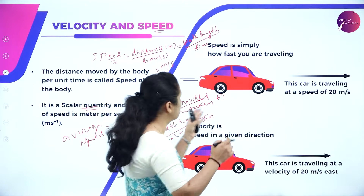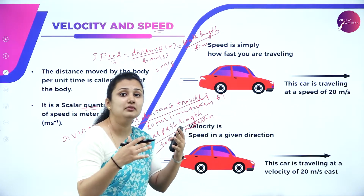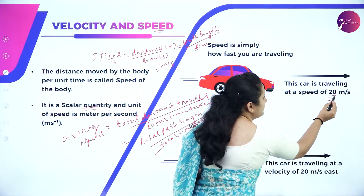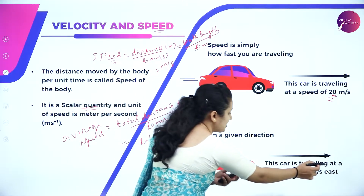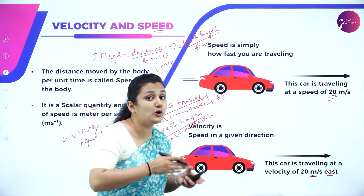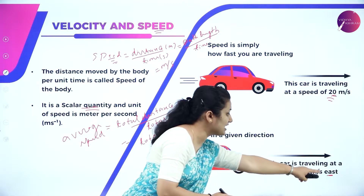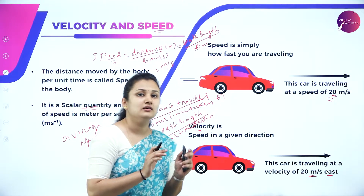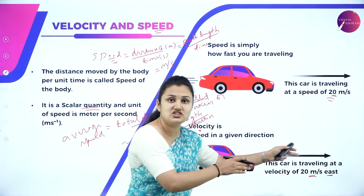Speed is simply how fast you are traveling — for example, a car traveling at 20 meter per second. Speed is a scalar quantity, so only magnitude matters, not direction. Velocity, however, specifies both magnitude and direction: a car traveling at 20 meter per second east. This distinguishes velocity as a vector quantity.